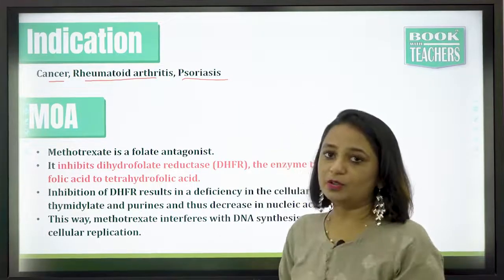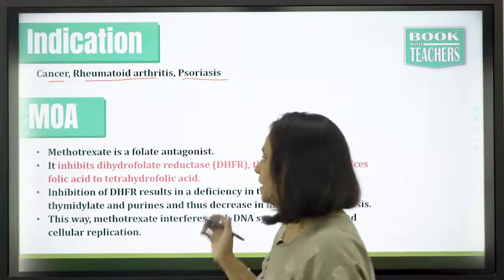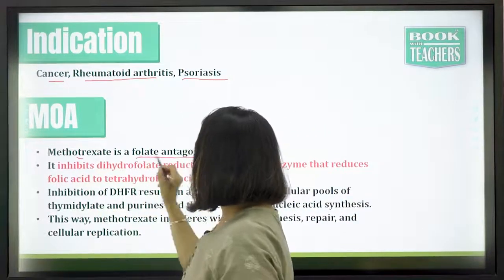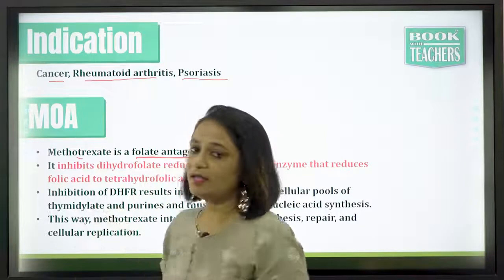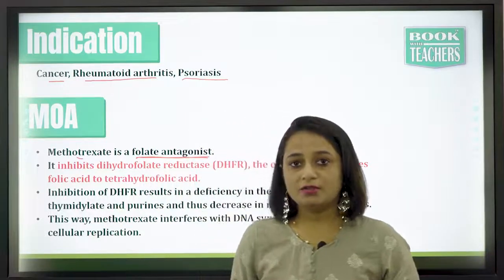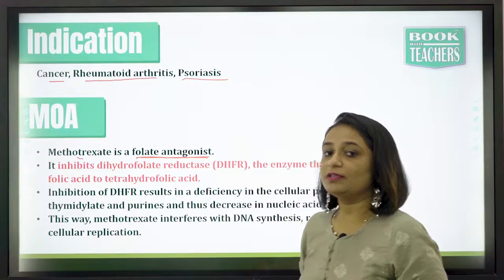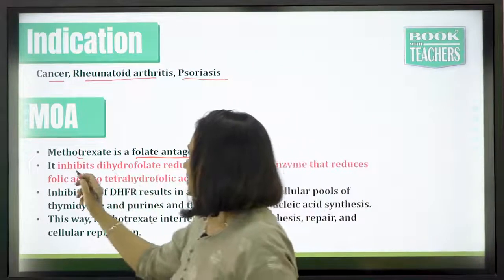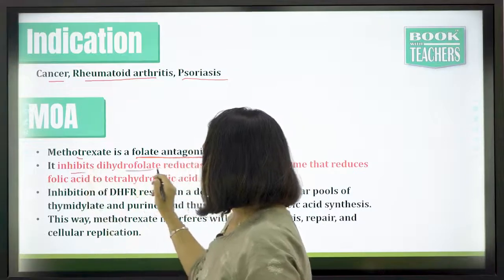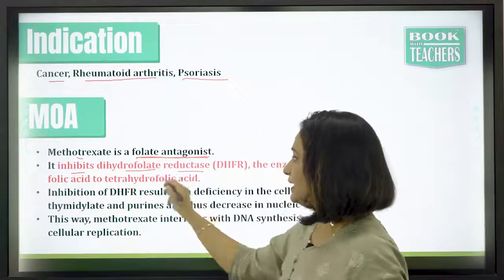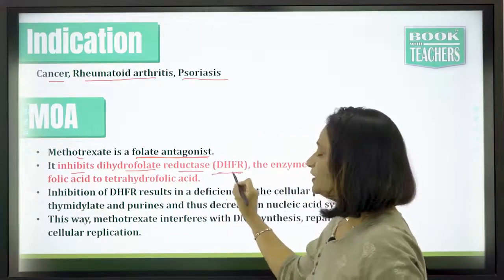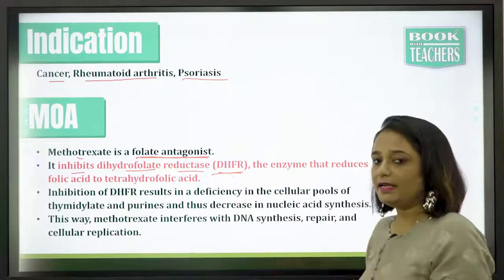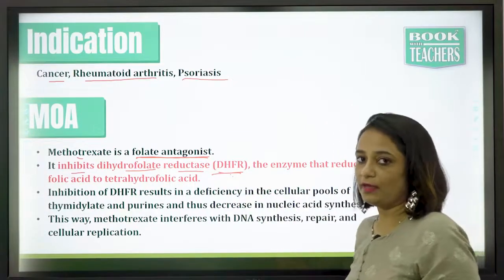Now we will see the mode of action — how methotrexate works. Methotrexate is primarily a folate antagonist, meaning it reduces the production of folic acid which is needed for cell replication. Methotrexate inhibits dihydrofolate reductase, which we can call DHFR. This is the enzyme needed to convert folic acid to tetrahydrofolic acid.